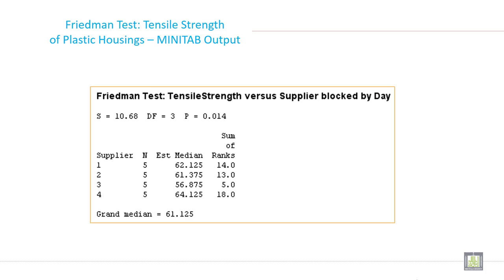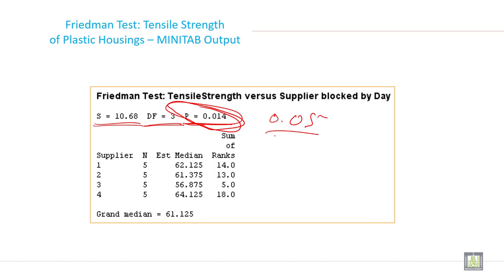Here we have the same example with Minitab output calculated from the computer. S is equal to 10.68, degree of freedom is 3. This P value is important — because P value is less than 0.05, we reject the null hypothesis. Your decision will be to reject the null hypothesis, and the median value is 61.125.